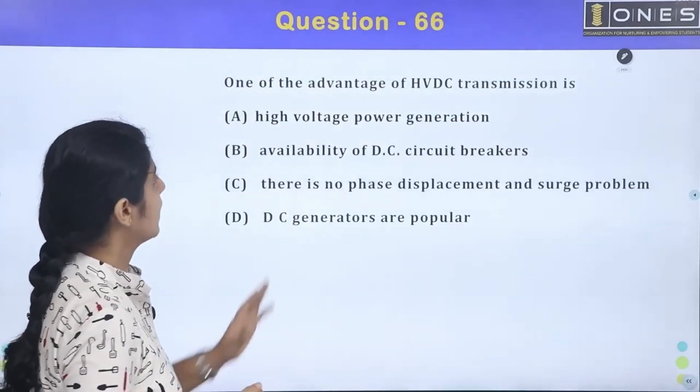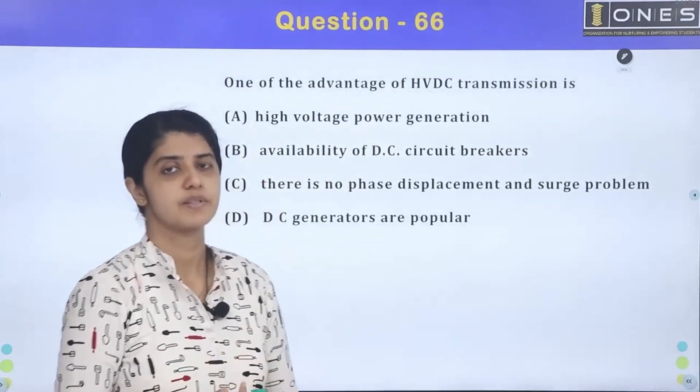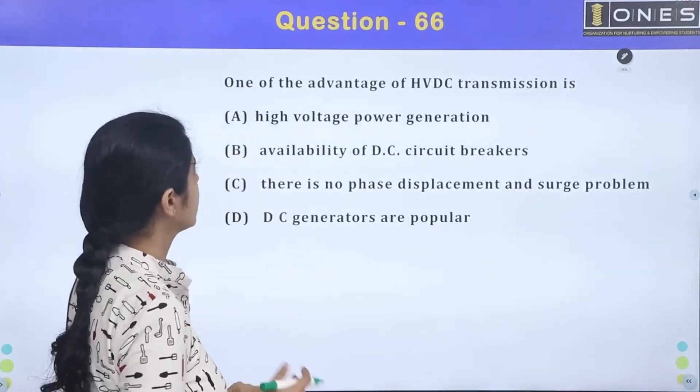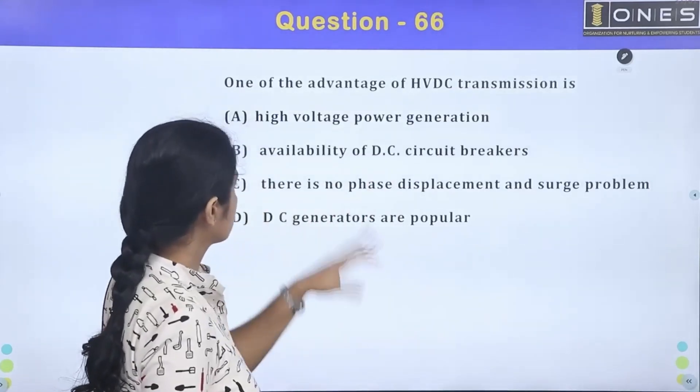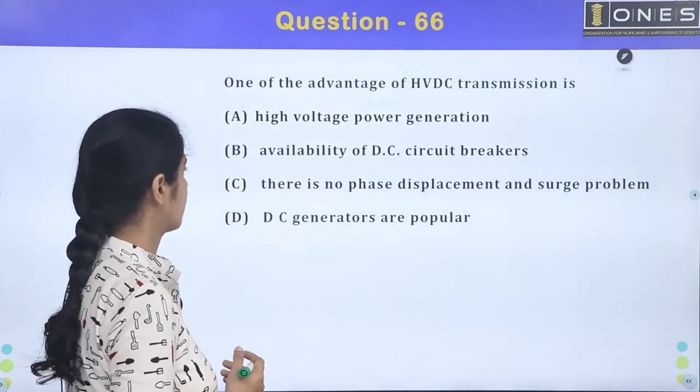66th question: one of the advantages of HVDC transmission, high voltage DC transmission, that advantage is to be identified. Options are: A) high voltage power generation, B) availability of DC circuit breakers, C) there is no phase displacement and surge problem, D) DC generators are more popular.